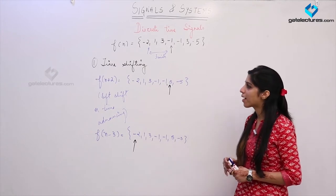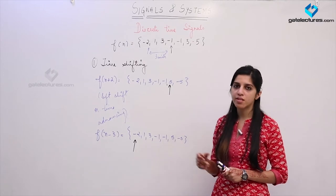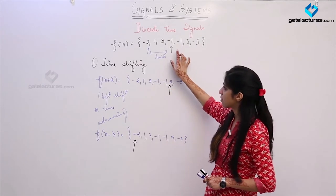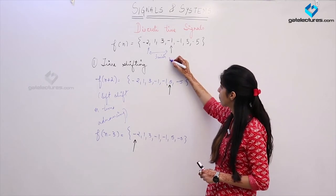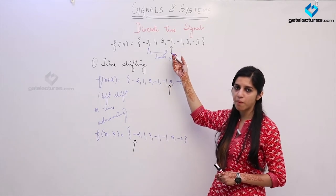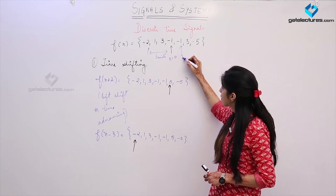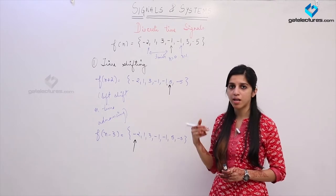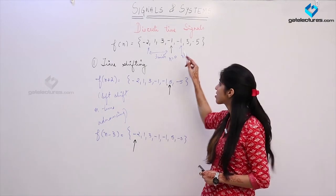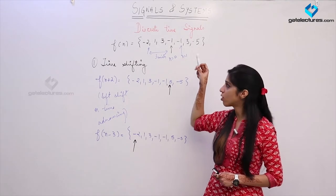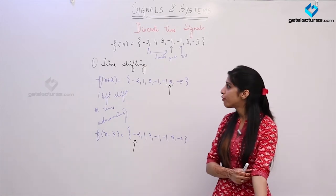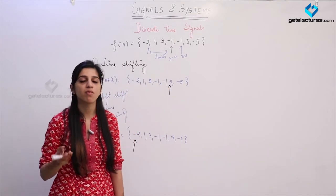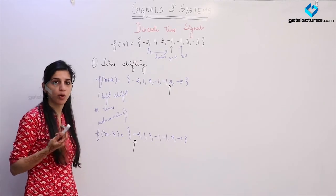Decimation means: if you are time compressing a signal, you are going to lose some samples. For example, a sample at n equals 1 when compressed by a factor of 2 would need to lie at n equals 1/2, which is not allowed in a discrete time signal. So we simply cancel or delete that sample — this is known as decimation. Whenever we compress a signal in the time domain, samples are going to be decimated or lost.